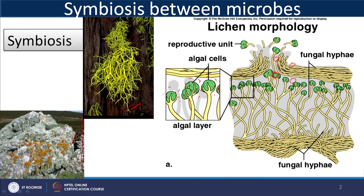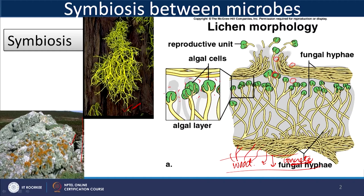Another way the phototrophic microbes benefit from their close association with fungus: if you remember how fungus feeds, it releases acids which degrade complex organics present. If it is wood, it degrades wood; if it is concrete, it corrodes the concrete — we have talked about oxalic acid from fungus corroding concrete. In that case, certain nutrients — micronutrients, macronutrients, sugars — are released, which are available for the phototrophic microorganism to consume.